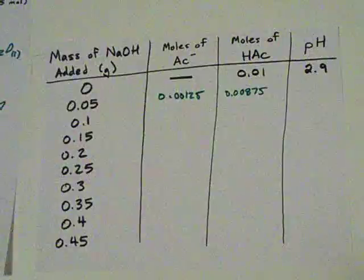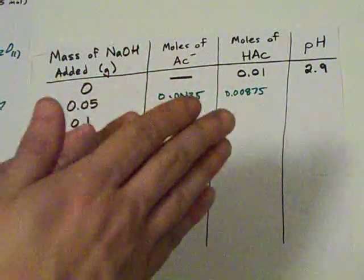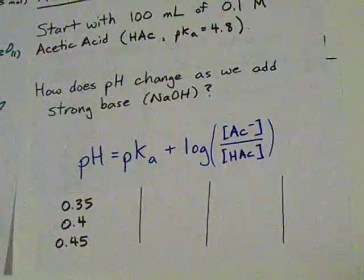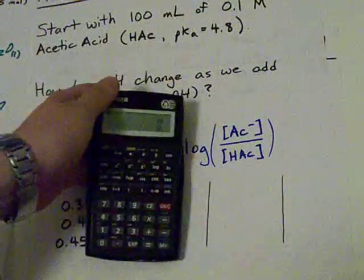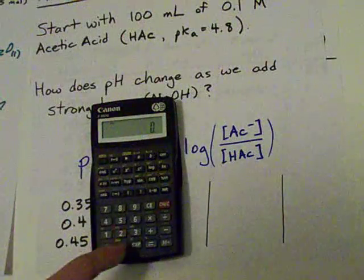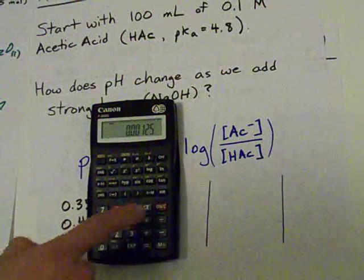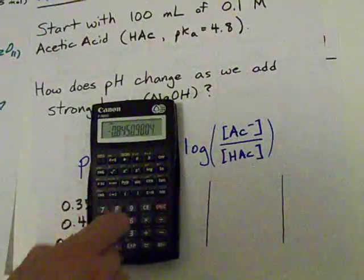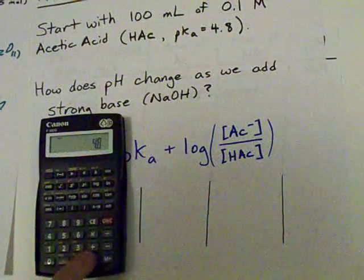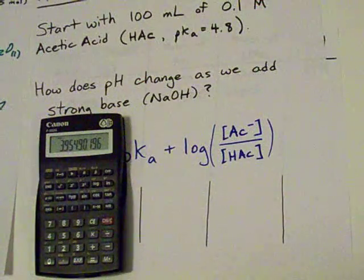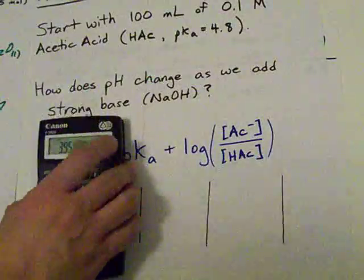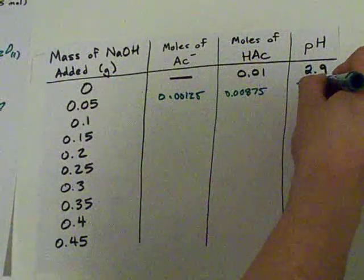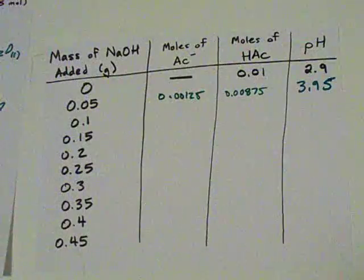Now, this is pre-equilibrium. I haven't accounted for the fact that there's like some shift here based on the Ka, but luckily for you guys, you don't have to know that. You just have to use the Henderson-Hasselbalch equation. This is why I love it so much. If I could marry it, I would. Let's write the amount of acetate, 0.00125, divided by the amount of acid, 0.00875. Take the log of it, and add the pKa, which was 4.8. Once I've added 0.05 grams of NaOH, my pH is now 3.95. Let's write that down. That is a money number. Adding 0.05 grams of strong base, our pH went up a whole unit.